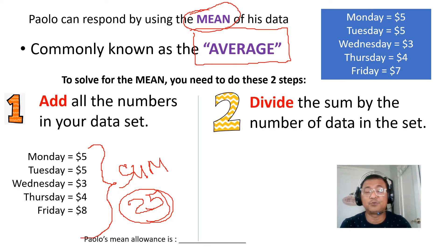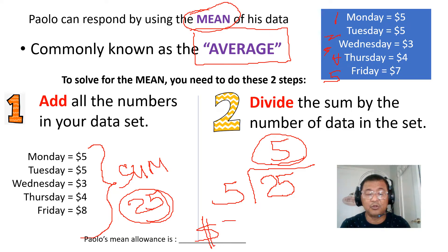For the second step, you have to divide the sum by the number of data in the set. I will divide that 25 by what number? Look at this: one, two, three, four, five. There are five numbers in the data set. So 25 divided by 5, you get a 5. So what's the meaning of five? Five is now called the mean. And Paolo would say to the teacher, I get an average of $5 daily.